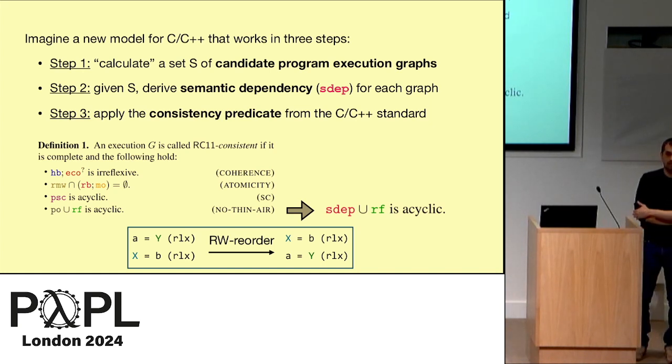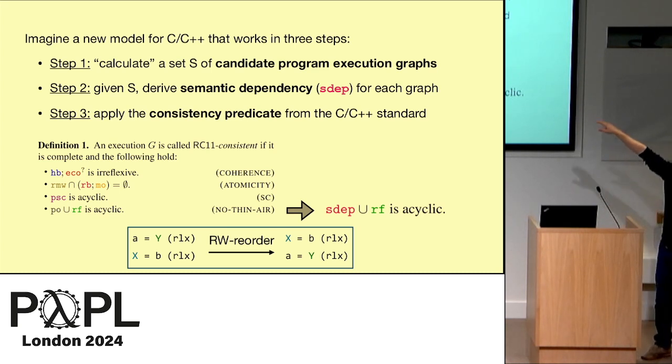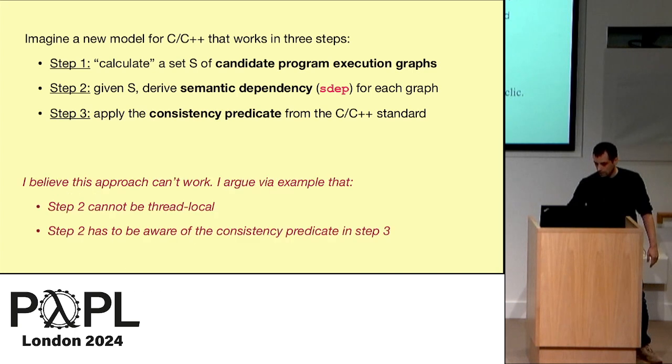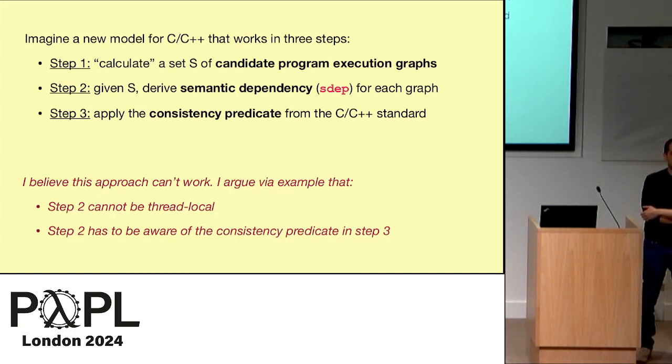And one of the nice things here is that we have this problem in the C standard for a long time, and we can now not change too much. We are not going to dramatically change the model, go to promising semantics or event structures or things like that. We just add this step two in the middle and somehow change one axiom, and things will work. So you can see from my tone that I think this cannot work, and I'll argue with an example that first, the step two thing cannot be thread local, which is already quite counterintuitive. You have to look in the code of other threads to see if you have a semantic dependency or not.